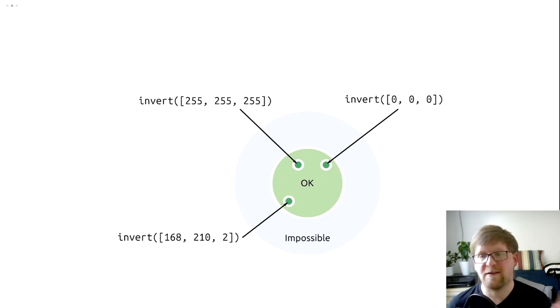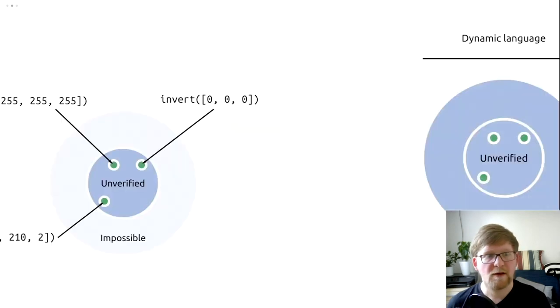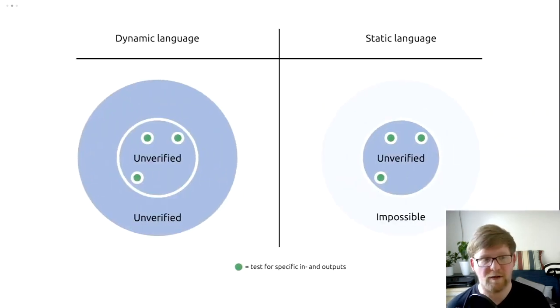If we go back to our circles, to the examples with the tests and the unverified space in the dynamic language, adding types to the language eliminates parts of the problem. And the problem that's being eliminated is that the unverified space becomes impossible. Programs cannot happen inside this impossible space. But what we also need to consider is that the OK space here is still just based on our assumption. The only verified properties of our programs are those where we have concrete examples, the tests.